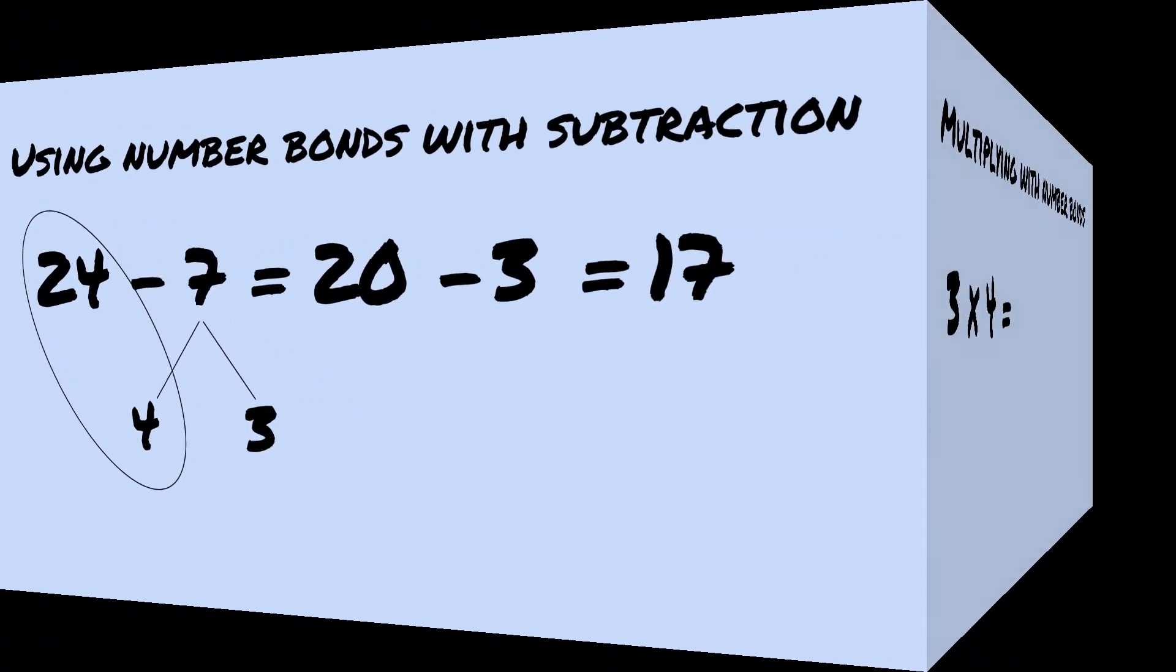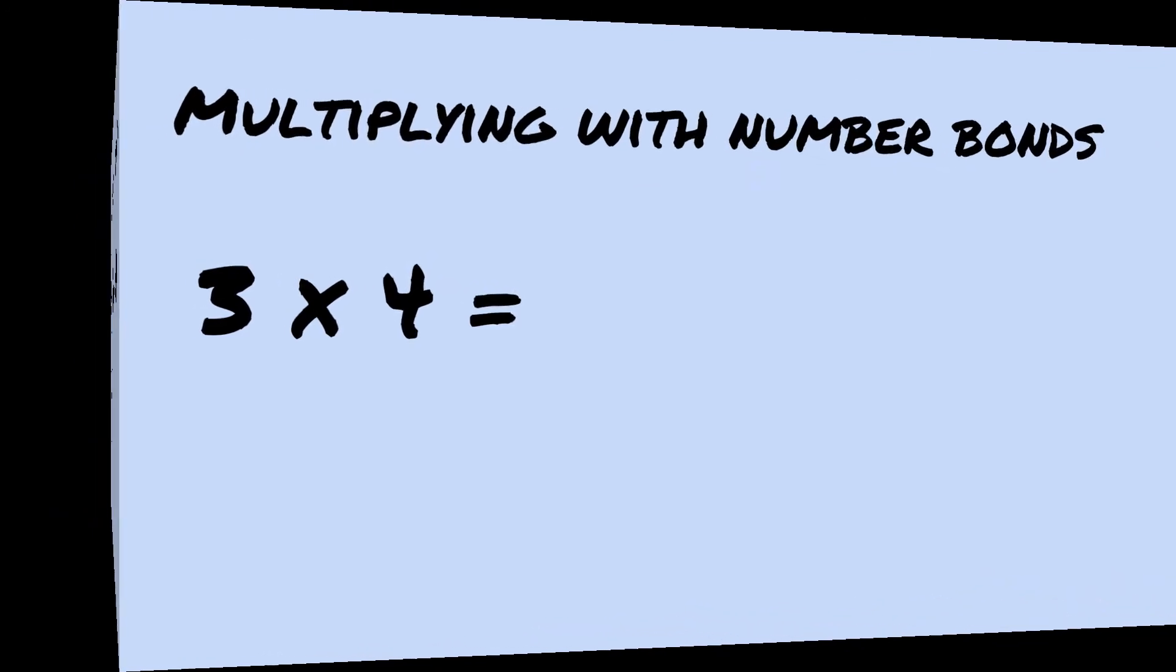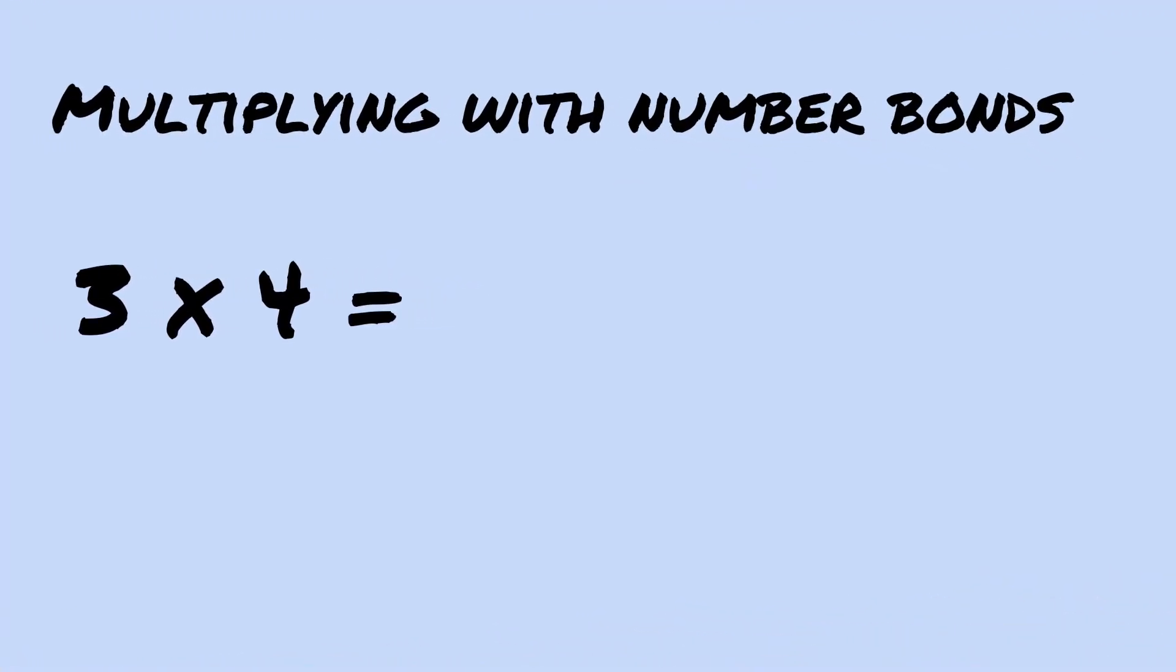This flexibility with numbers is also important when we learn to multiply and divide. When we are learning to multiply, we can find unknown products building on what we do know.